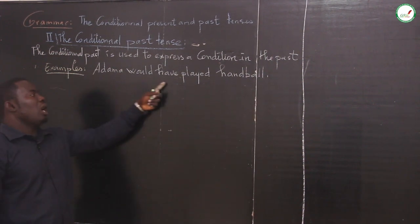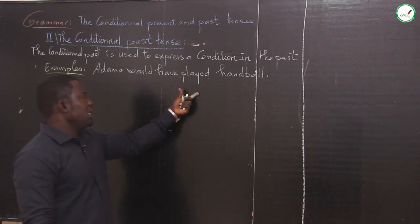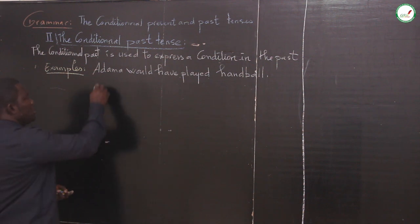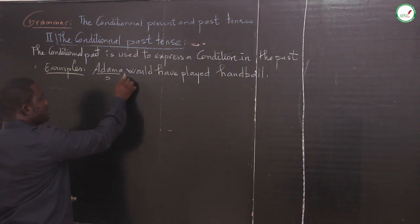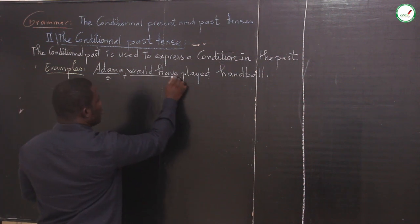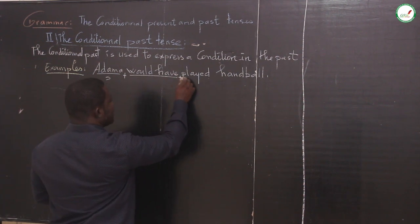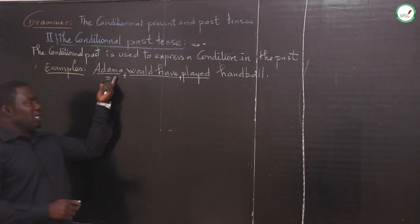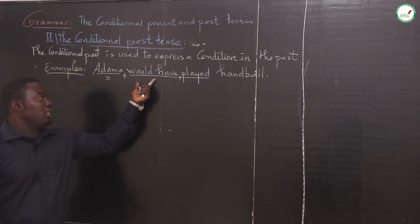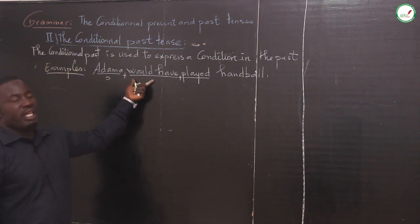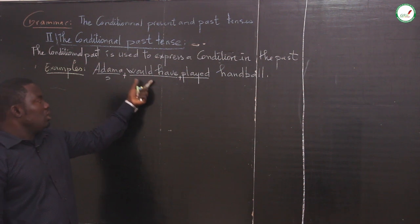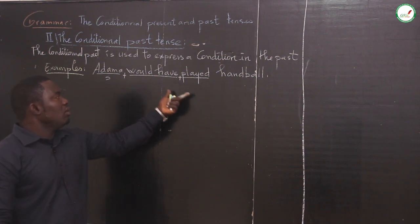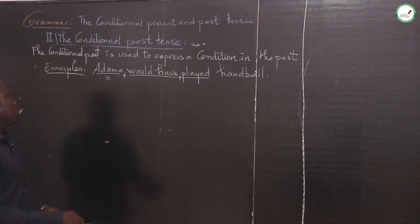Adama would have played handball. Here they have: subject plus auxiliary of the conditional 'would,' plus 'have,' plus past participle. Here is the subject, here is the auxiliary of the conditional 'would,' here is 'have,' plus past participle.